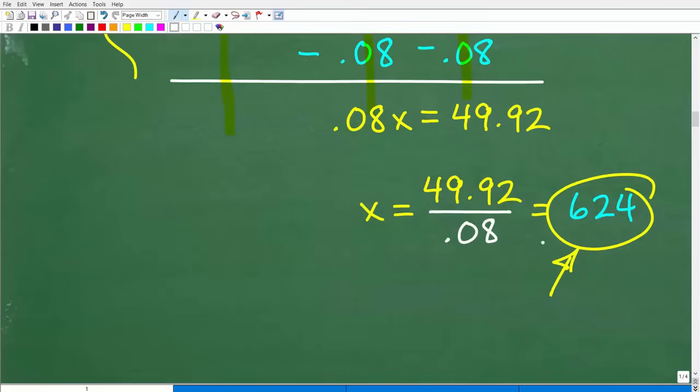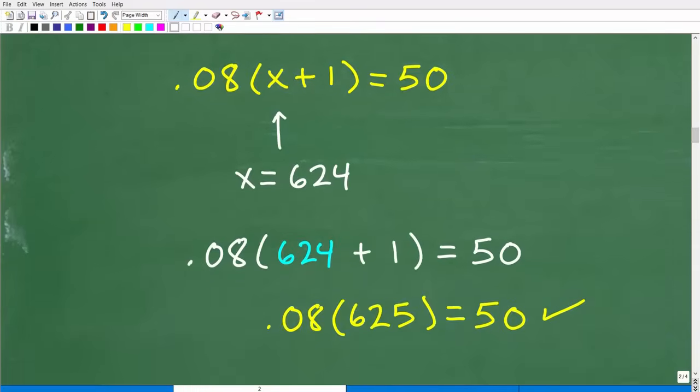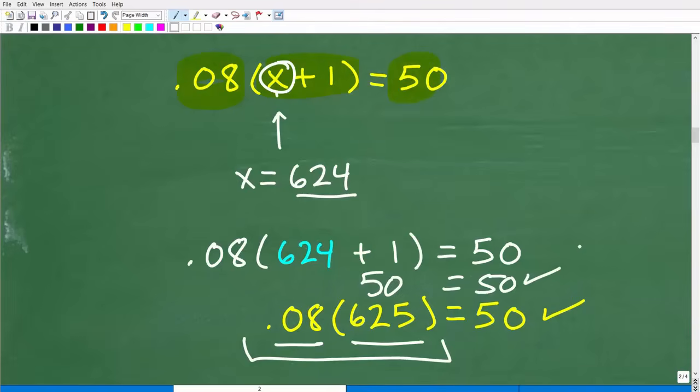But here's the deal. Let's suppose we did this whole thing and we have our answer 624. Can we check our work? Yes, we can. Let's go ahead and do this right now. So 8%, which is the same thing as 0.08, 8% of X plus one is 50. We're saying that X is equal to 624. Well, let's replace this X with 624 and see if the left-hand side equals out to be equal to the right-hand side. So this would be the same thing as 0.08 times 624 plus one, which is the same thing as 625. If you do this in your calculator, you'll see that you'll end up with 50. So 50 equals 50. That is a true statement. This is how we can check our answers.